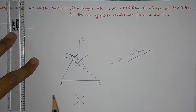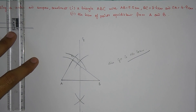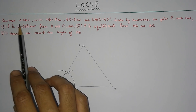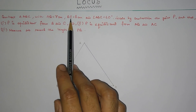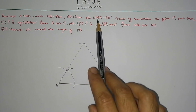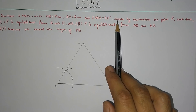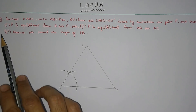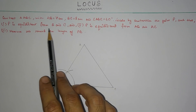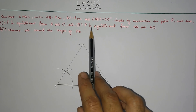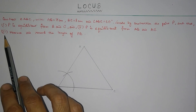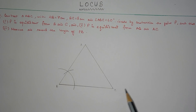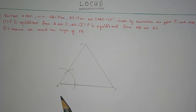Now we move to the next question. Construct triangle ABC with AB equal to 7 cm, BC equal to 8 cm, and angle ABC equal to 60 degrees. You have to locate by construction the point P such that: number one, P is equidistant from B and C; number two, P is equidistant from AB and AC; and number three, measure and record the length of PB. I have already constructed the triangle.